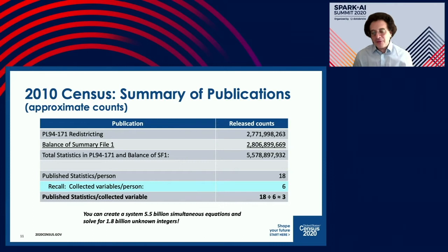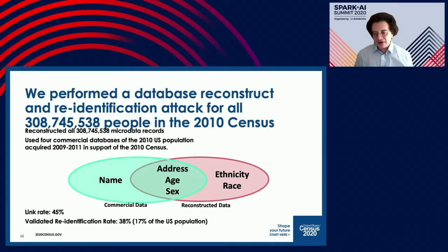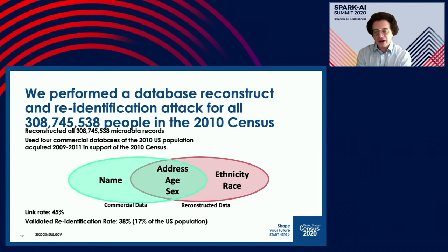From high school math, you may remember that if you have more equations than unknowns, you can solve for the unknowns. You can literally build a system with 5.5 billion equations and solve for the roughly 1.8 billion unknowns — and we've done that. That's called database reconstruction. We performed that database reconstruction attack on our published data from 2010 using only public microdata.